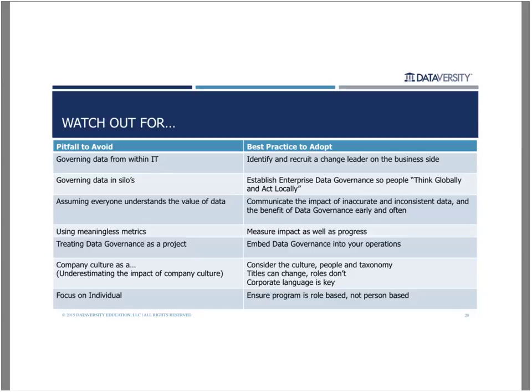A related pitfall is governing data in silos, which happens in large organizations where cross-line-of-business coordination is very challenging. The idea is to be able to govern data consistently across your organization, even if the implementation of that governance is unique to the operations of a particular business unit or region — thinking globally about your data as a global enterprise asset, and acting locally as it pertains to your job, business unit, or region.